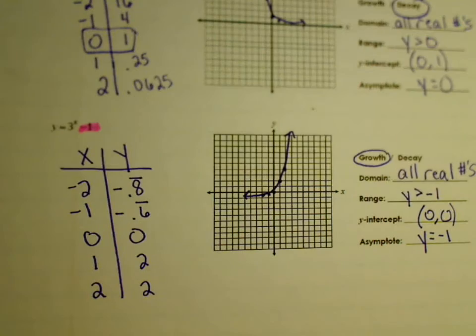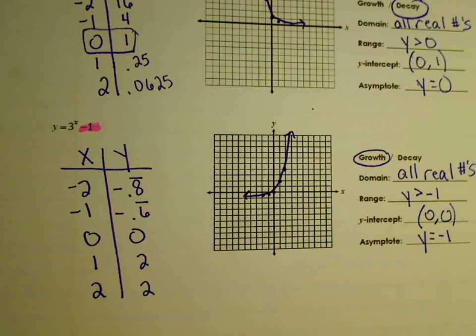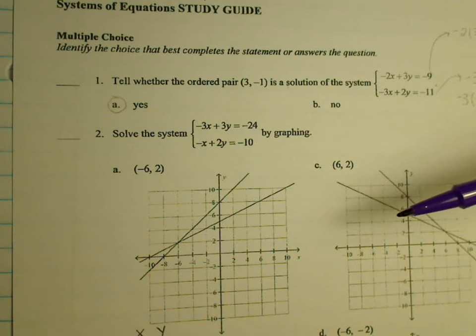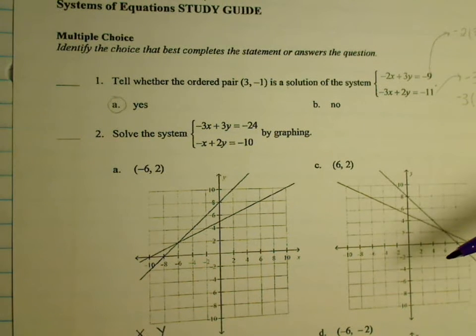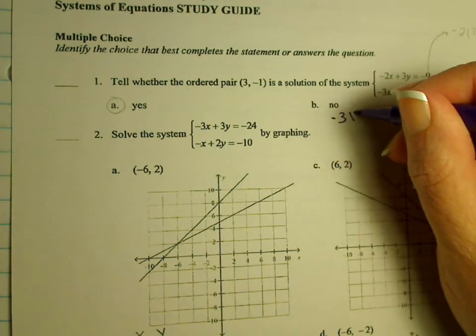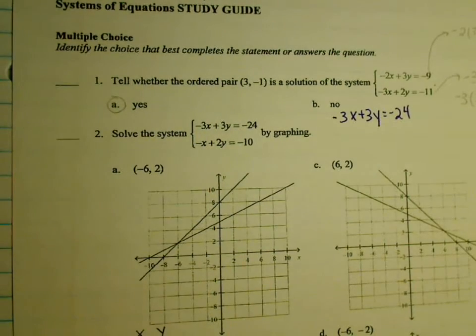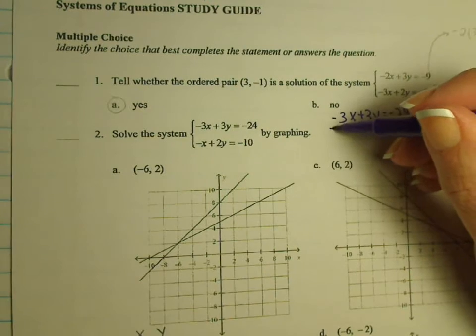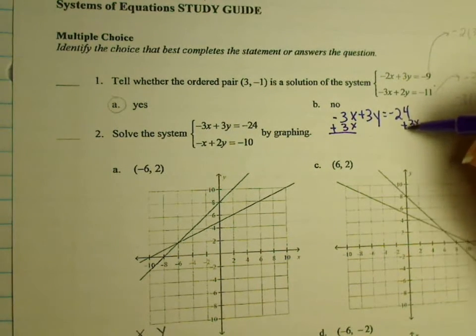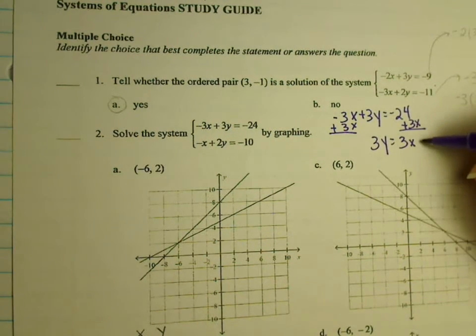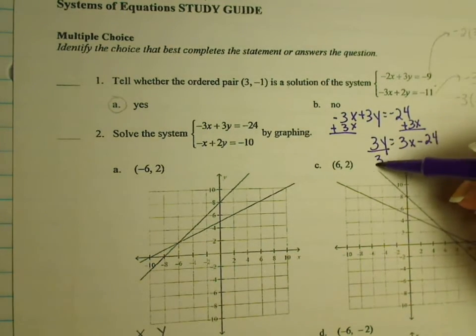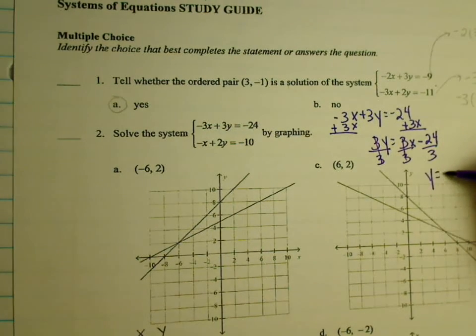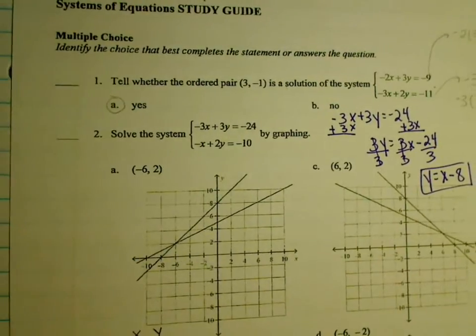We're going to do a little bit of review to go back over for your systems test. Now that we've done the problems in review — where we talked about changing the equations into slope-intercept form and putting them into the calculator — you could really do about every problem on this test that way. So I could take this first equation and change it into slope-intercept form by moving the x term using inverse operations.